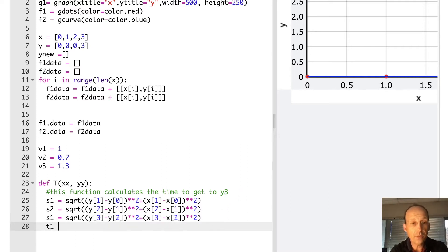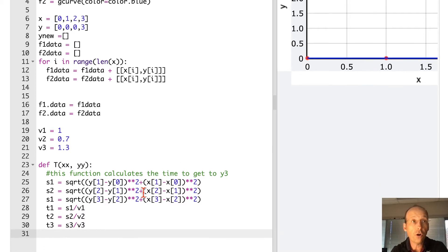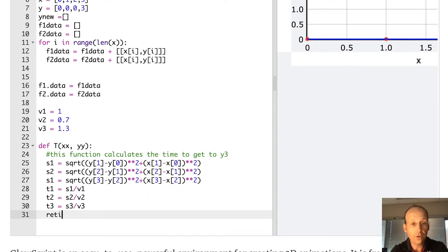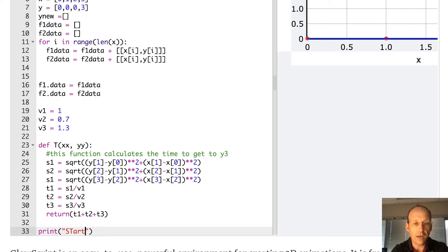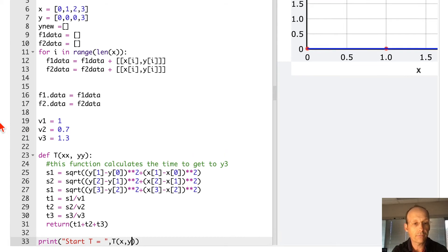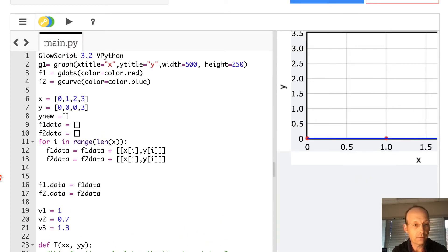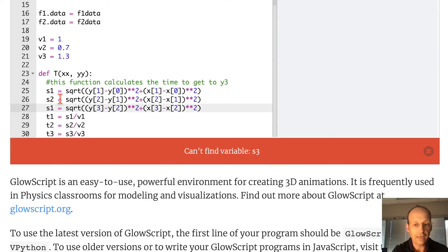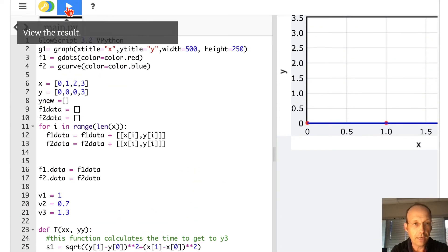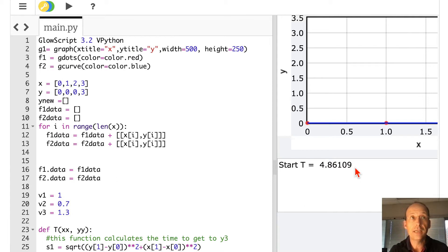Okay. So now I'm going to go ahead and calculate the time. T one is just going to be S one over V one. T two is S two divided by V two. T three is S three divided by V three. And then I'm going to return the function that's going to return the total value. So I'm going to say return the total time T one plus T two plus T three. Let's just see if this works. So I'm going to say, print start time start T equals the function T I'm going to give it the list X and the list Y and that should work. And it didn't can't find S three because I didn't name it that that's okay. Making mistakes. Just part of it.